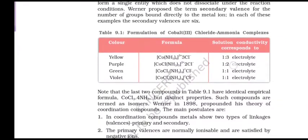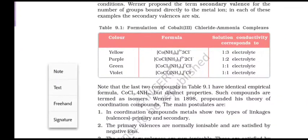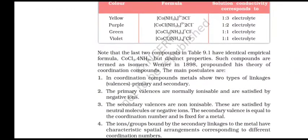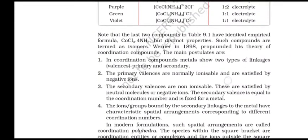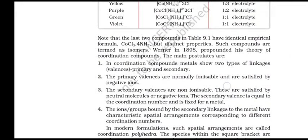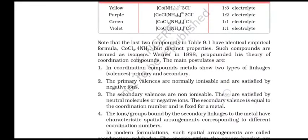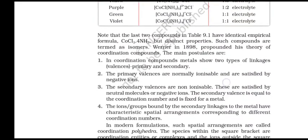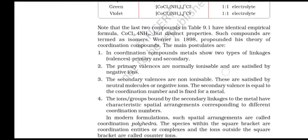Werner proposed the term secondary valence for the number of groups bound directly to the metal ion. In each of the examples, the secondary valence is 6. Note that the last two compounds in the table have identical empirical formula CoCl3·4NH3 but distinct properties. Such compounds are termed as isomers.